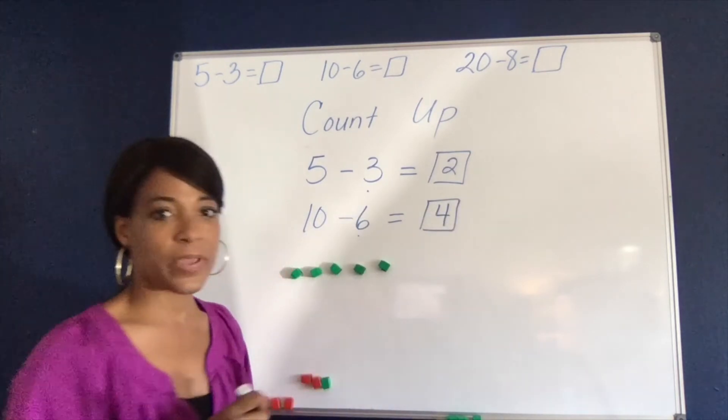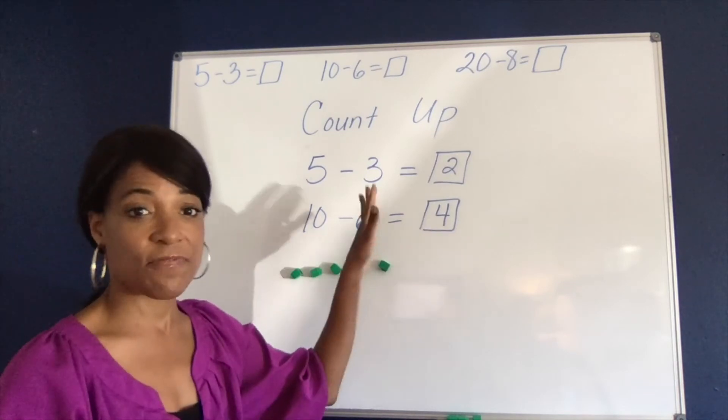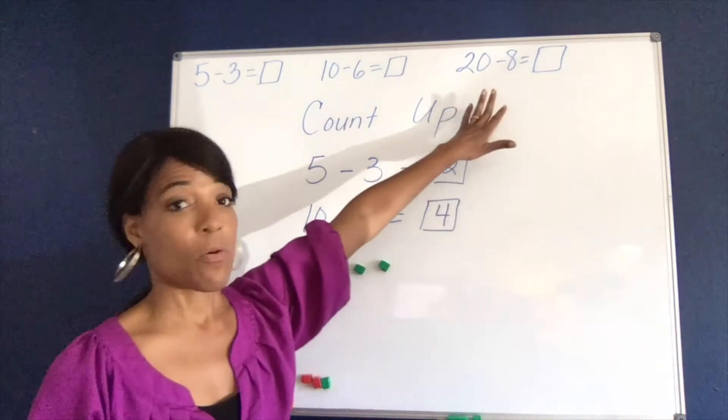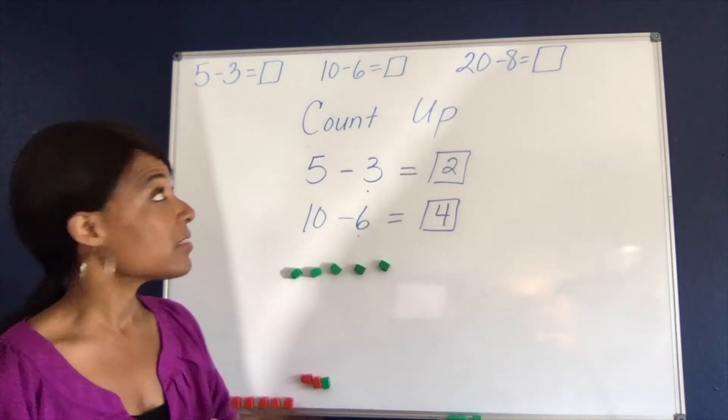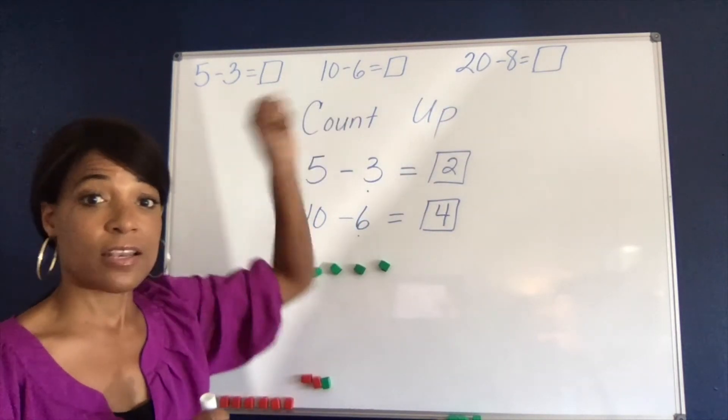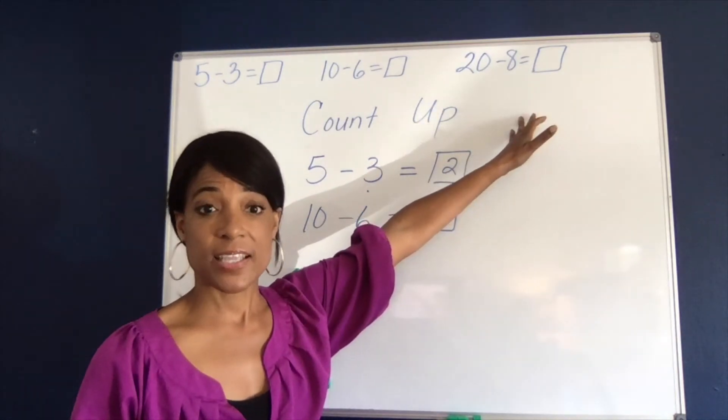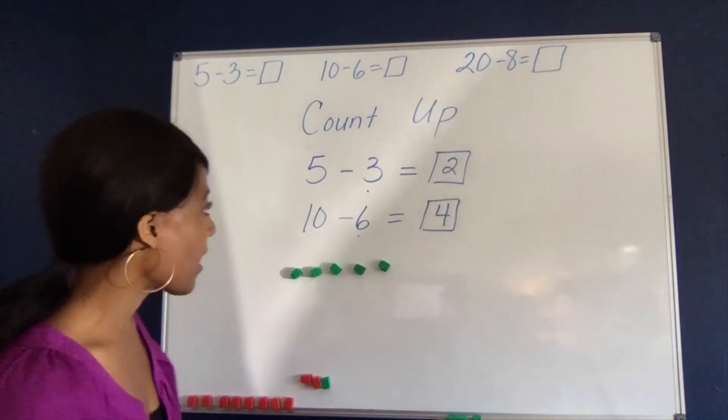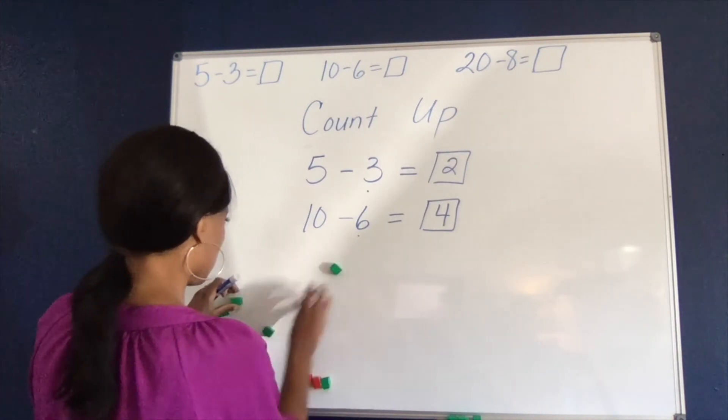So since we have 10 fingers, most of us anyways, it makes those facts to 5 and 10 much easier. But what about when it comes to facts to 20? How do we do that? That's where those facts to 5 and 10 come together to help them solve more sophisticated numbers.